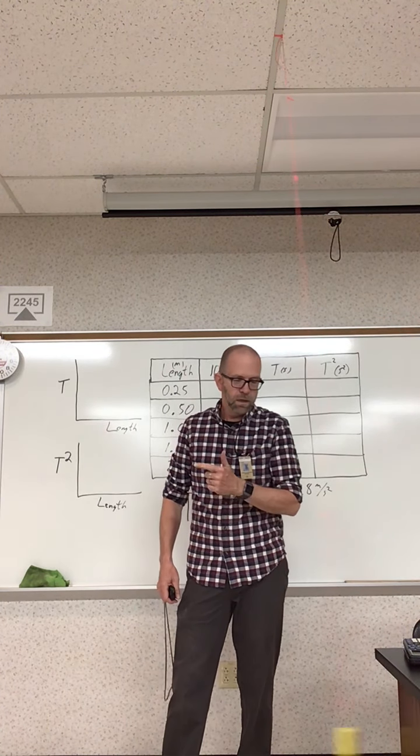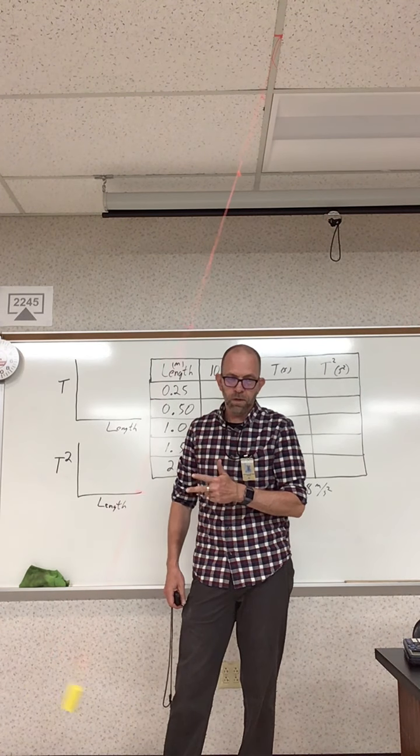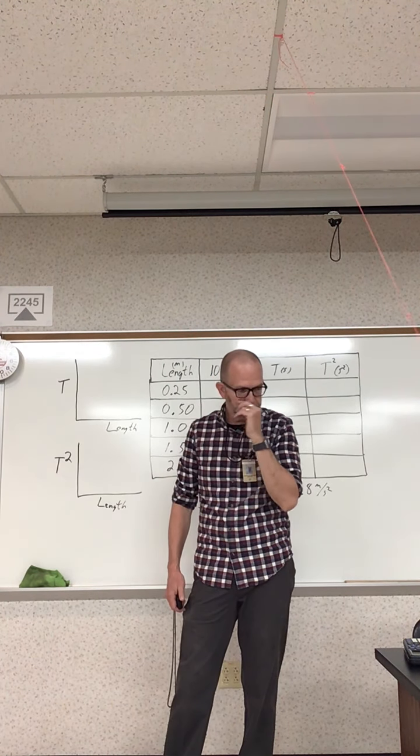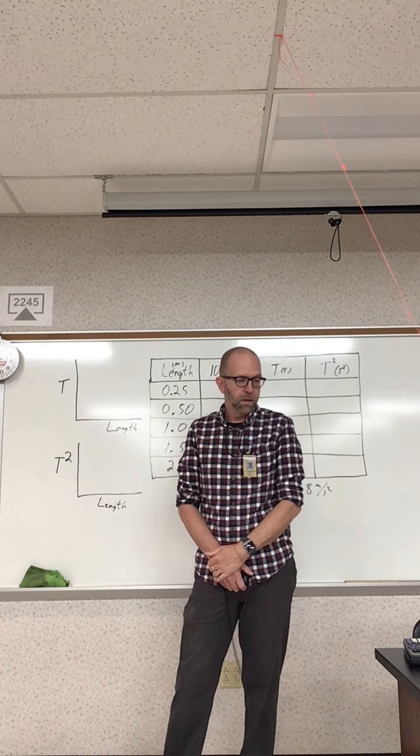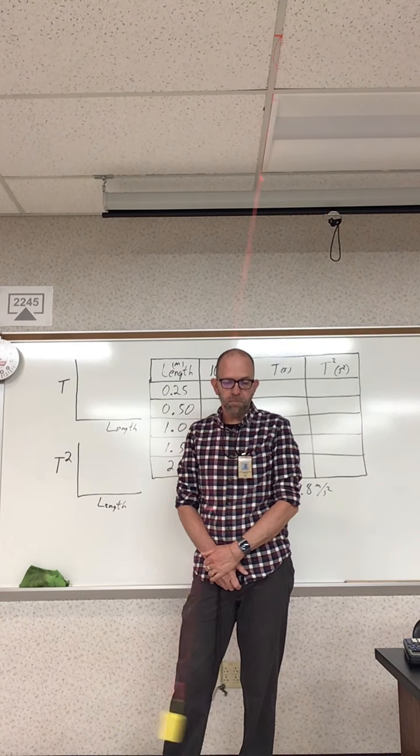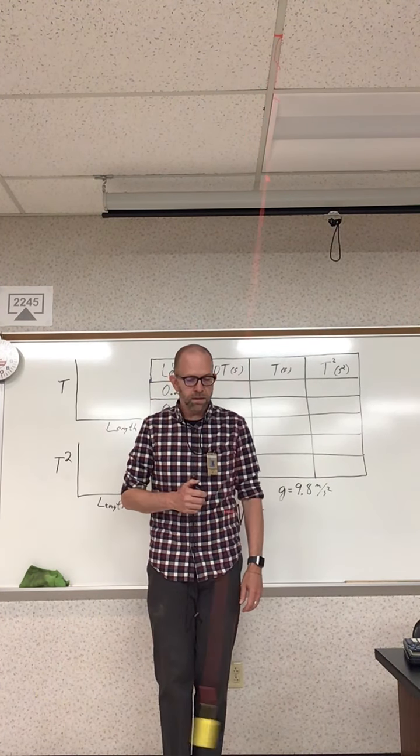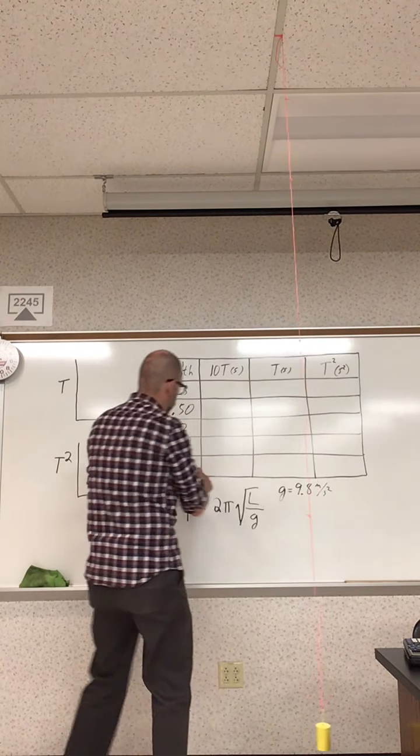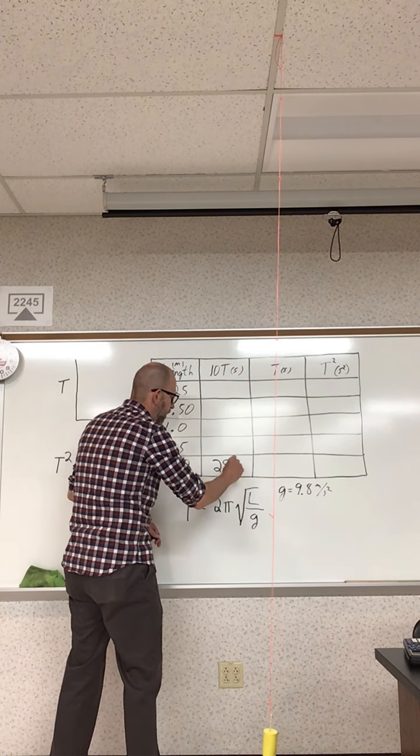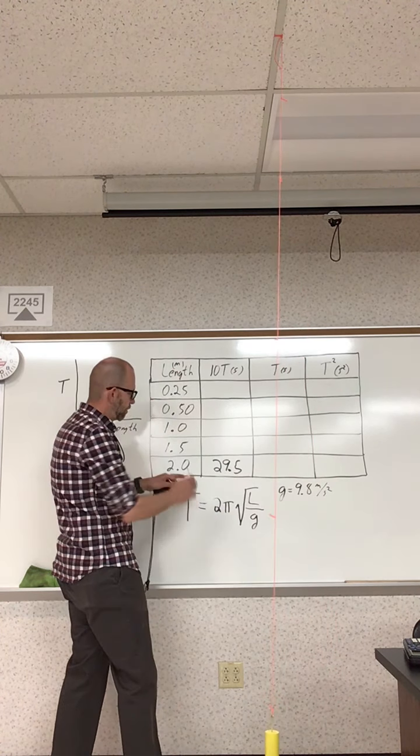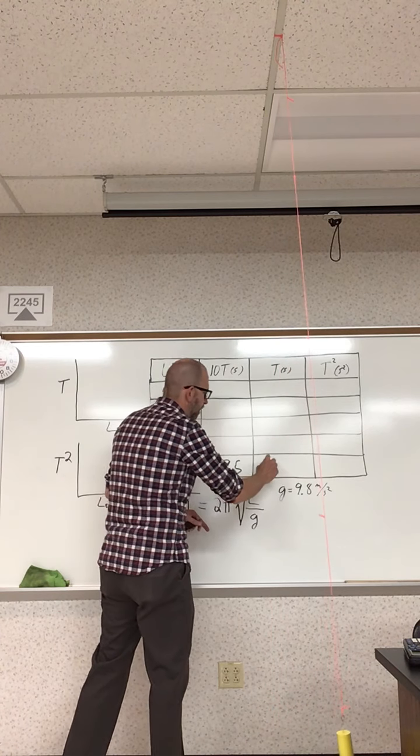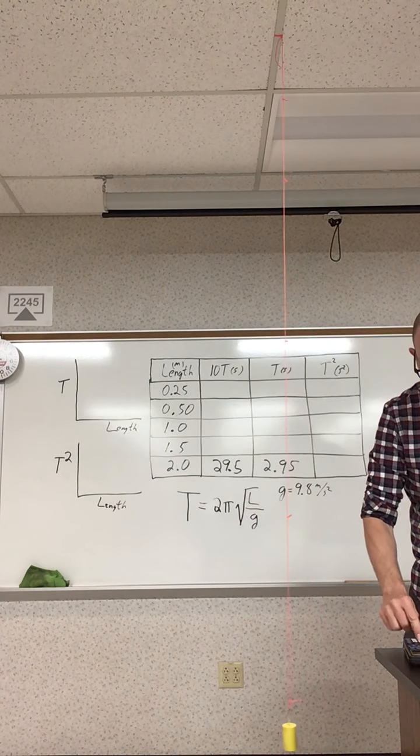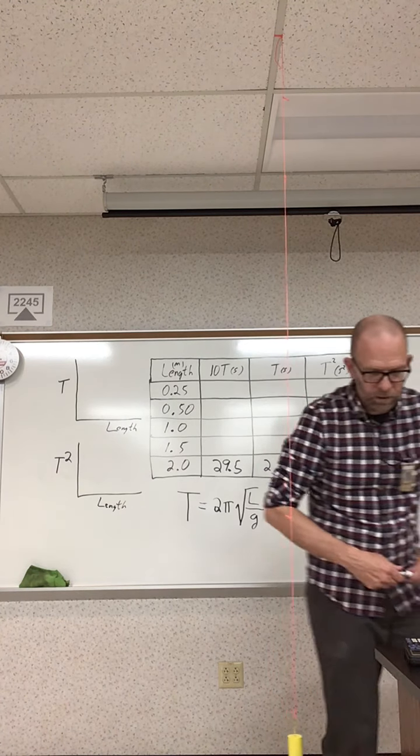One, I hope I don't lose count. Two, three, yes, sometimes data collection is tedious, especially when you have to watch somebody else do it. Five, six, seven, eight, nine, and ten. So that was 29.5 seconds for a two meter pendulum—ten swings was 29.5 seconds. So one complete swing was just a tenth of that, or 2.95 seconds. And we'll go ahead and figure out what the square of that is, 8.7 seconds squared.